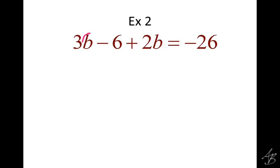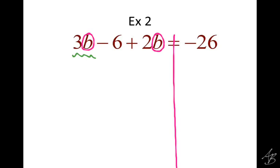So when we circle our variables, you'll notice that the variable is in two different places. If the variable is in different places, we have to deal with that before we can do anything else — we cannot get the B by itself if it's in two different places. Step one says simplify each side of the equation. There's nothing to distribute here, so we combine like terms. We have the 3B and the 2B. What is 3B plus 2B? 5B.